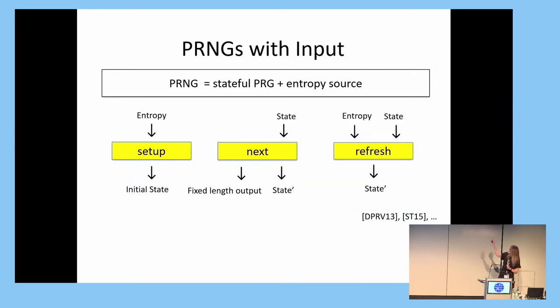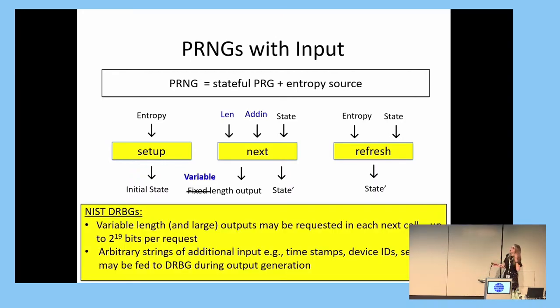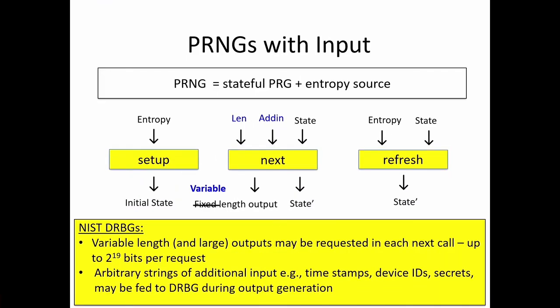Back to PRNGs — this is pretty much how PRNGs look in the literature. The NIST-DRBGs are specified a bit differently, in that they take as input a number of optional inputs and parameters. The first difference is that while we normally think of PRNGs as generating a fixed-length output in response to each next call, the NIST-DRBGs allow variable-length outputs to be requested — the standard allows up to 2^19 bits of output per call. Another difference is that the standard allows for optional strings of additional input, such as timestamps or device IDs, to be fed to the generator during output generation requests.